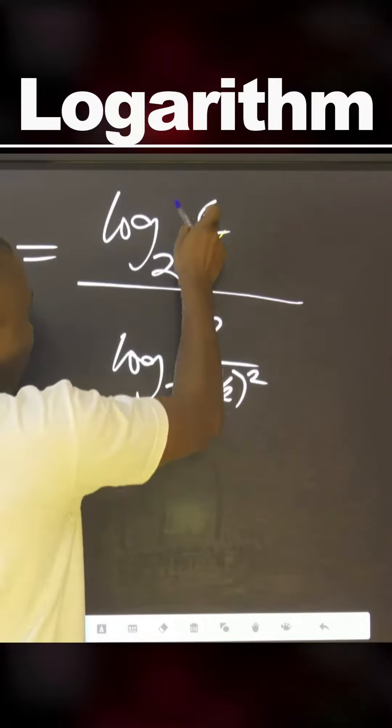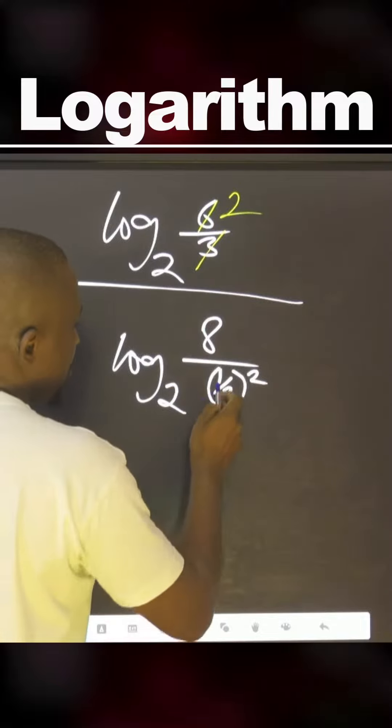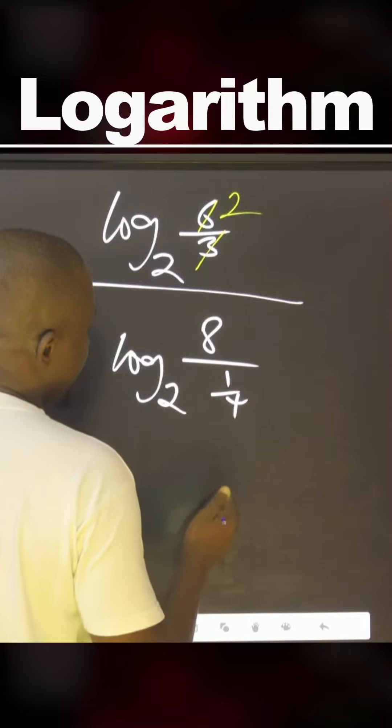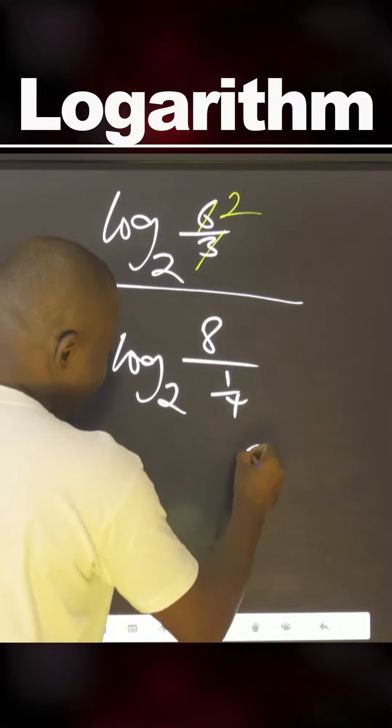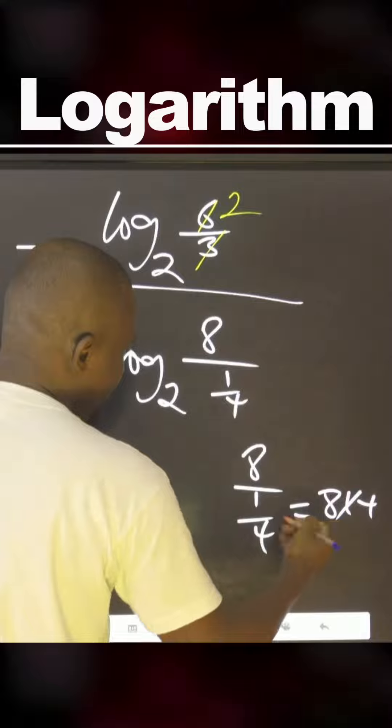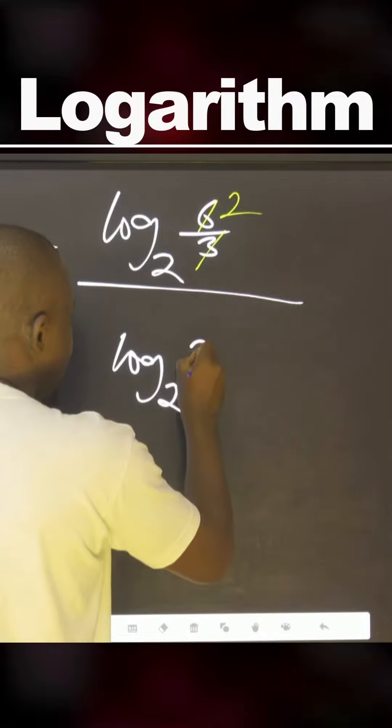You agree with me, this one is two. This one means one over four. Let's work on that: eight over one over four equals eight multiplied by four, that is 32.